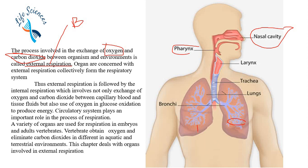External respiration is followed by internal respiration, which involves not only the exchange of oxygen and carbon dioxide between capillary blood and tissue fluid, but also the use of oxygen in glucose oxidation to produce energy. In external respiration, simply the exchange between internal and external environment occurs, whereas in internal respiration, oxygen is used to oxidize glucose and produce energy.